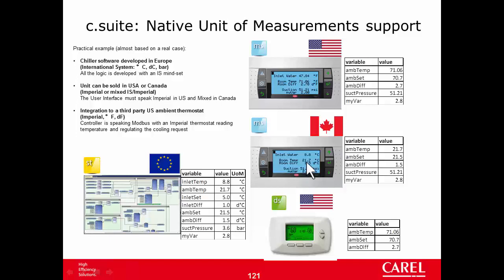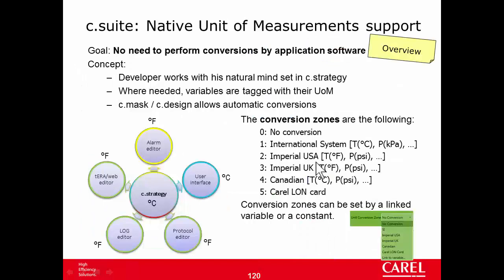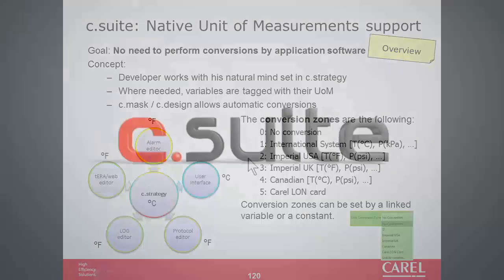The only thing the developer has to do — though it is not always mandatory — is to show beside the value the unit of measure according to the current conversion zone. You already know how to do this: use the resource used on bool or the resource used on int property of the mask. That's all for the native unit of measurement support. In KSA there is also a demo of this feature, which is very simple.